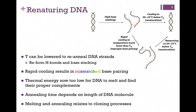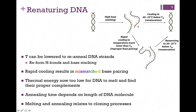In terms of re-naturing the DNA — that is, bringing the two strands back together — we can simply lower the temperature and it re-anneals, reforming those hydrogen bonds and re-stacking those bases. If we cool it too rapidly, though, those hydrogen bonding contacts will form in a mismatched way.